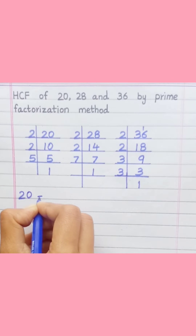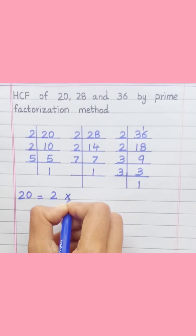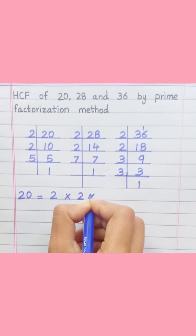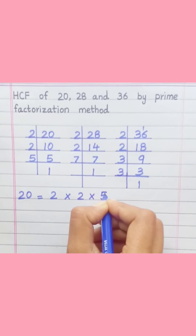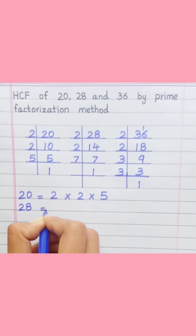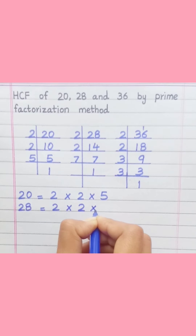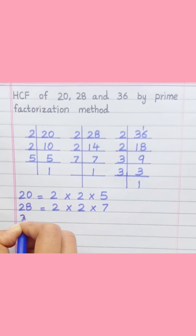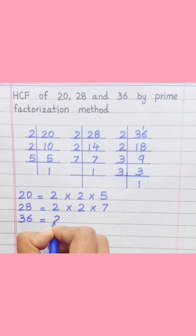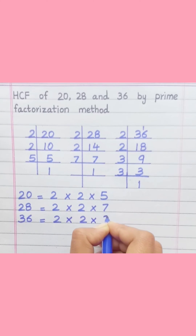20 = 2 × 2 × 5. 28 = 2 × 2 × 7. 36 = 2 × 2 × 3 × 3.